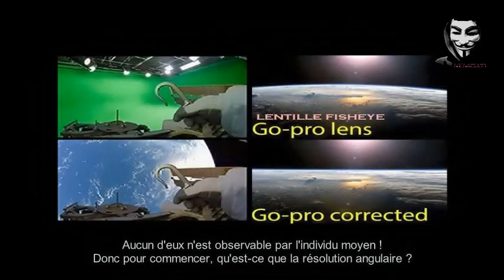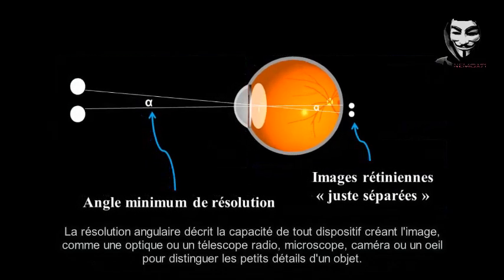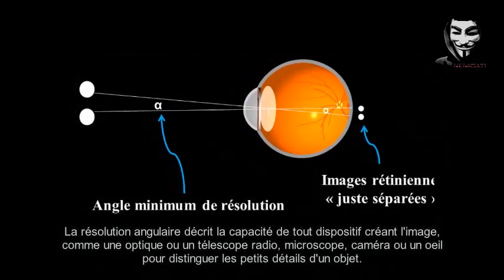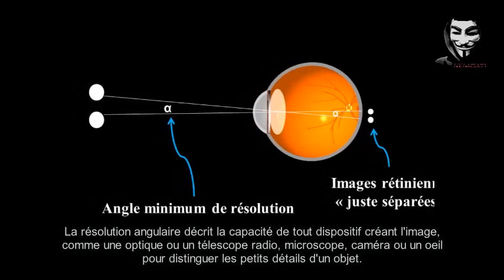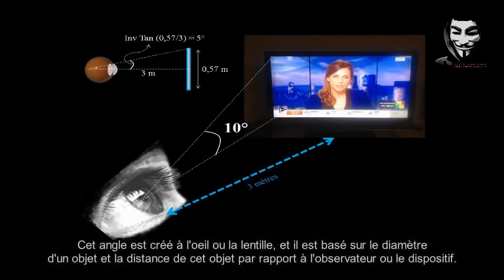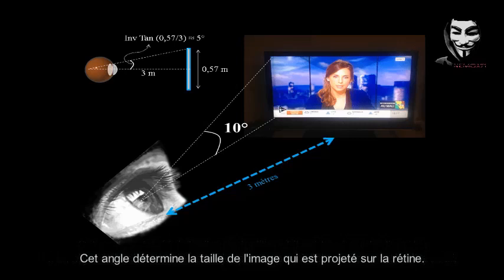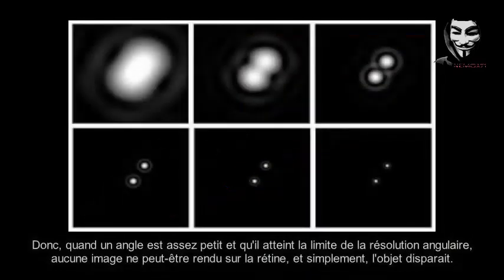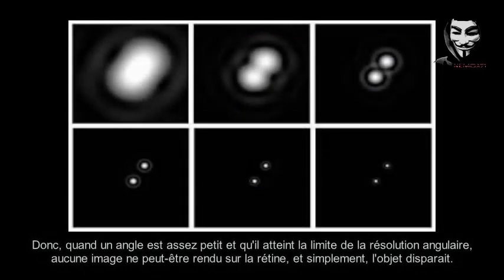So, to begin: what is angular resolution? Angular resolution describes the ability of any image-forming device, such as a telescope, microscope, camera, or the human eye, to distinguish small details of an object. It is the minimum angle needed so that an instrument can discern resolvable detail, and it represents the resolving power and precision of optical instruments, which includes the eye. This angle is created at the eye or the lens, and it is based on the diameter of an object and that object's distance from the observer or the device. This angle determines the size of the image projected onto the retina. Once an angle is small enough that it reaches the angular resolution limit, no image can be resolved on the retina, and basically the object disappears.